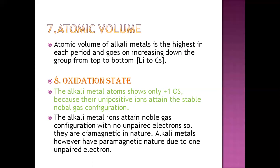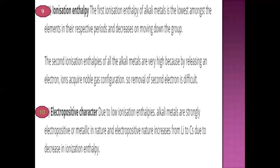Alkali metal ions are diamagnetic in nature since they have no unpaired electrons, while alkali metals themselves are paramagnetic due to the presence of one unpaired electron. Paramagnetic substances behave like magnets in a magnetic field — they are attracted to a magnetic field and return to their original state when removed. Diamagnetic substances do not behave like magnets and are not attracted by a magnetic field.